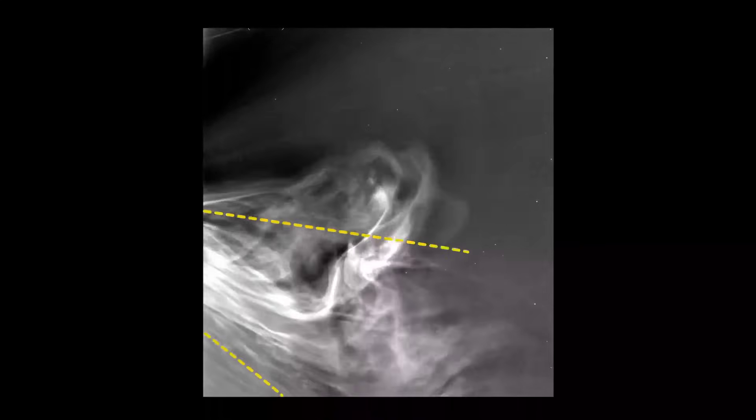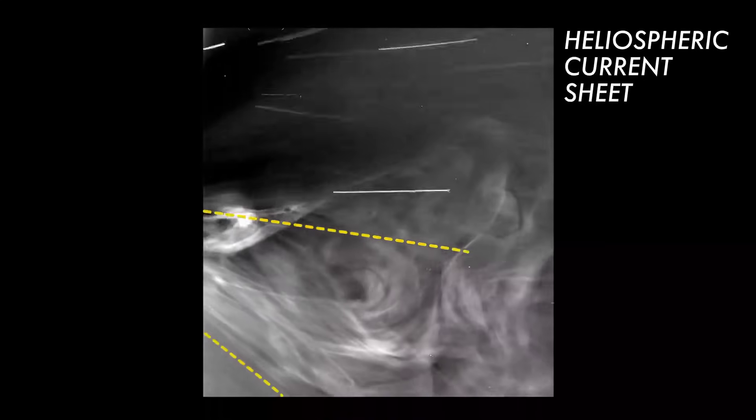On the far left, there's another key feature. This region marks an important structure known as the heliospheric current sheet.